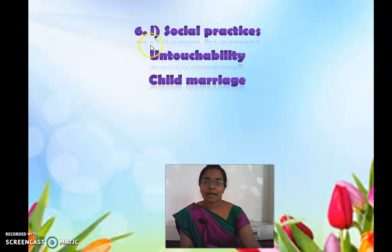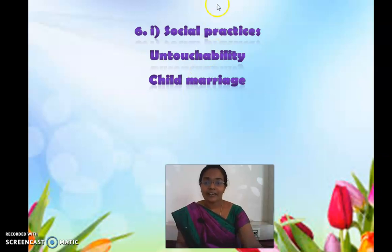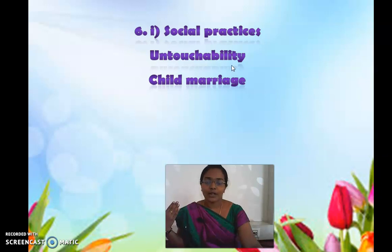The social practices are untouchability and child marriage, which took society backward. These are the evil practices which took the society backward during the rule of the Britishers.